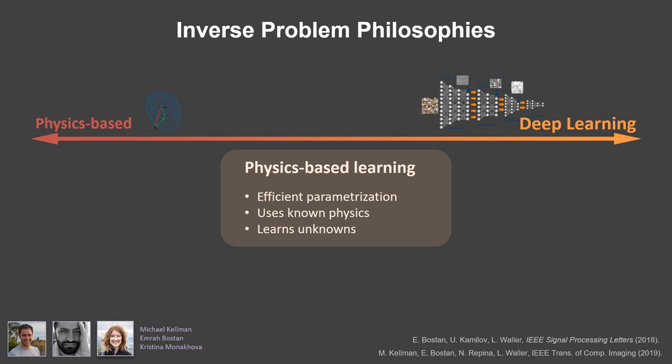What we come out with is a neural network whose architecture is defined by the physics of the situation, so it becomes very efficient and we can get away with very little training data and get good results.